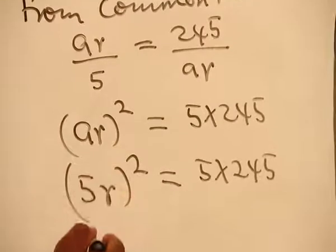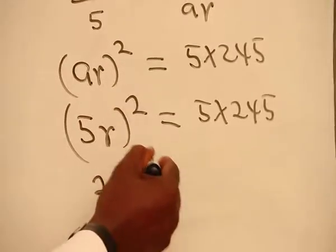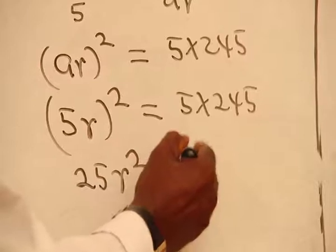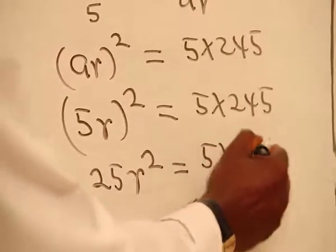If you square 5, you have 25. If you square r, you have r squared is equal to 245.